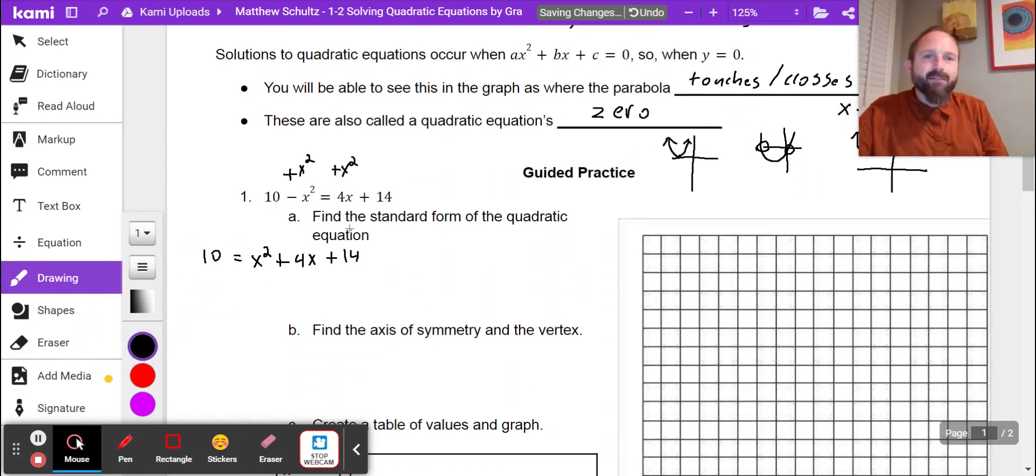Now I just need minus 10 on both sides to get that zero. If I minus 10 on both sides, that doesn't do anything with the x's, but this 14 minus 10 is now plus 4. And so now all I need to do is figure out what is my axis of symmetry and my vertex.